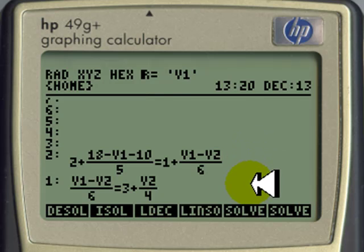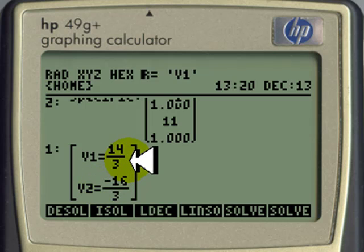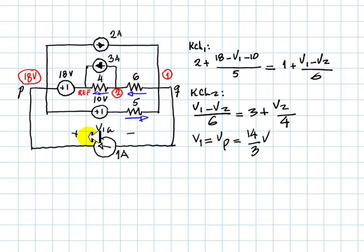These are the two equations we need to solve. The solution is that V1, which is VP, is 14 over 3. Of course, V1A is VP minus VQ, 18 volts minus 14 over 3.